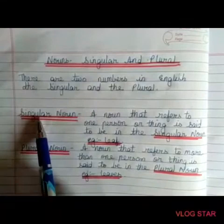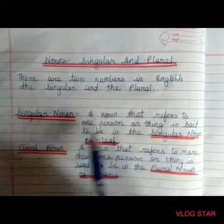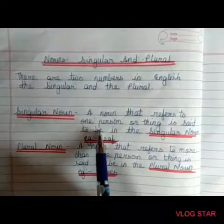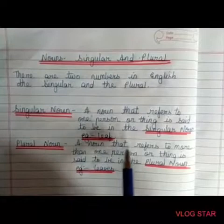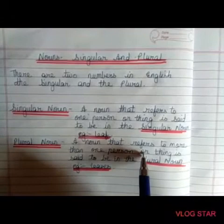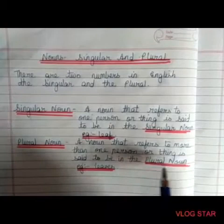Singular noun: a noun that refers to one person or thing is said to be in the singular. Example: leaf. Now let us study plural noun: a noun that refers to more than one person or thing is said to be in the plural. Example: leaves.